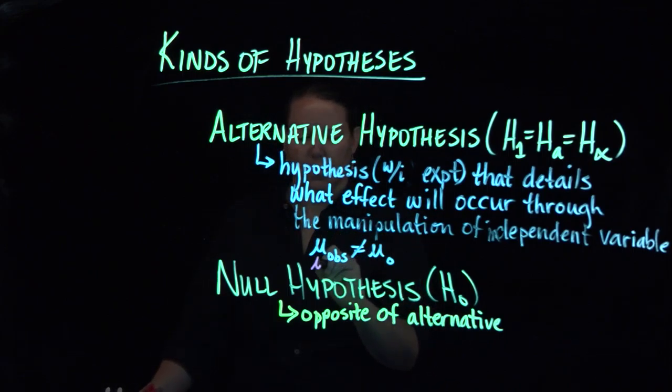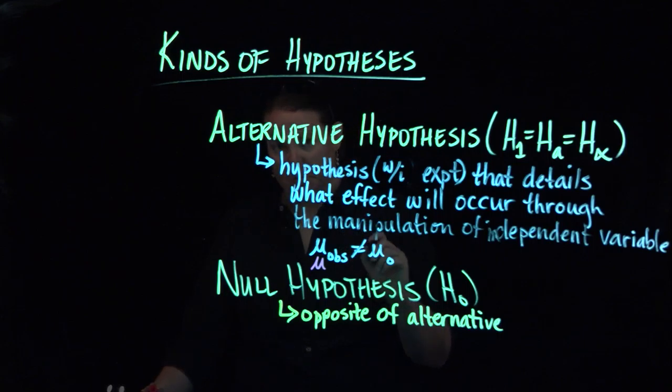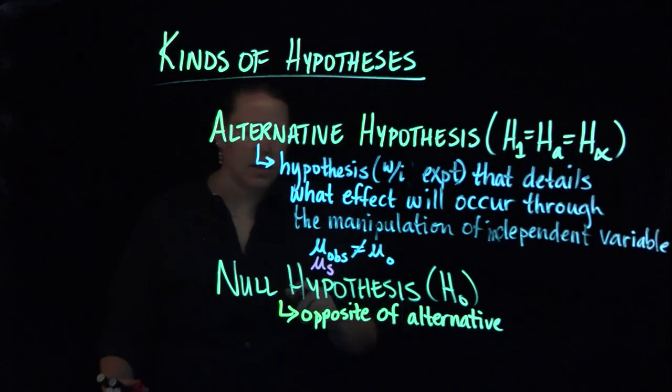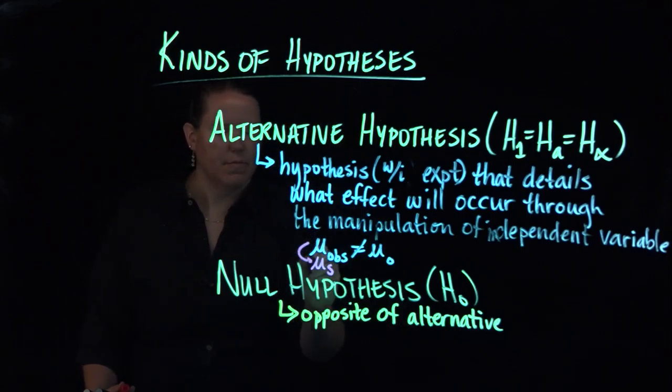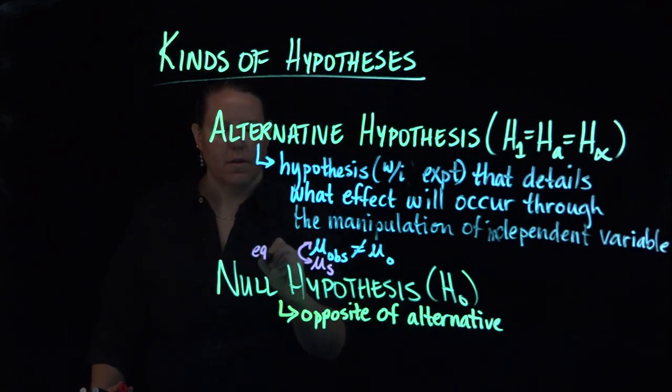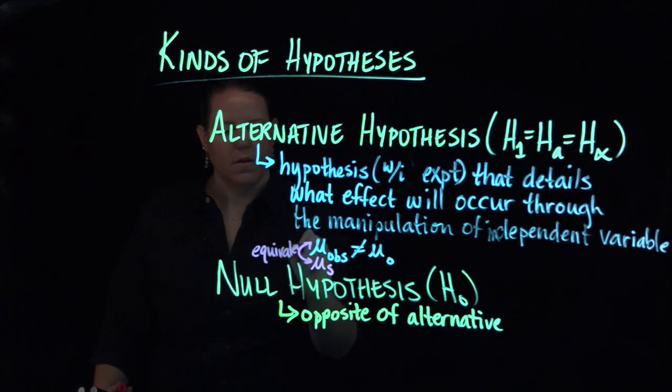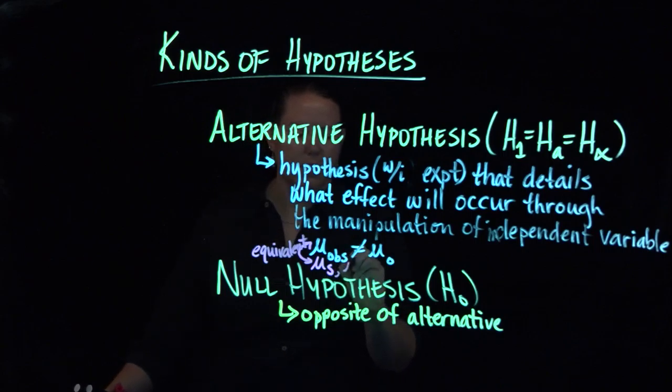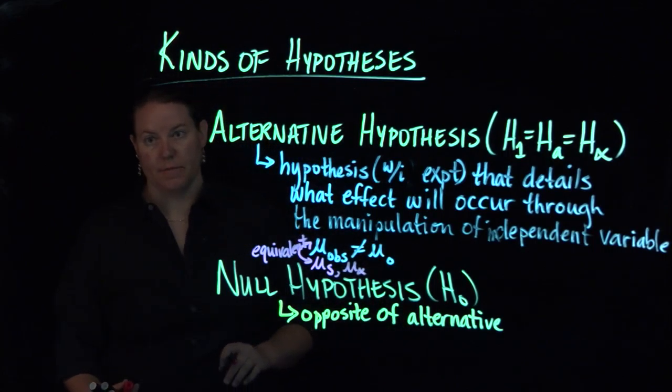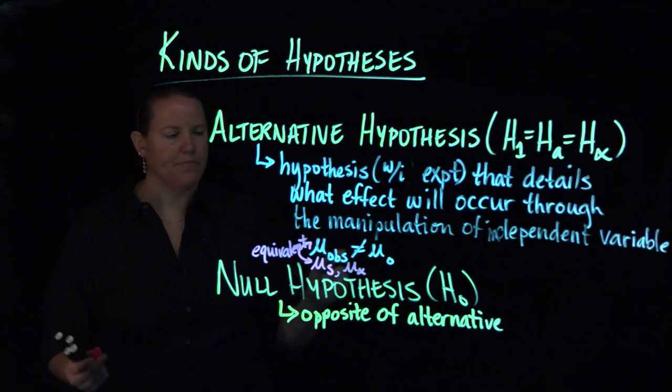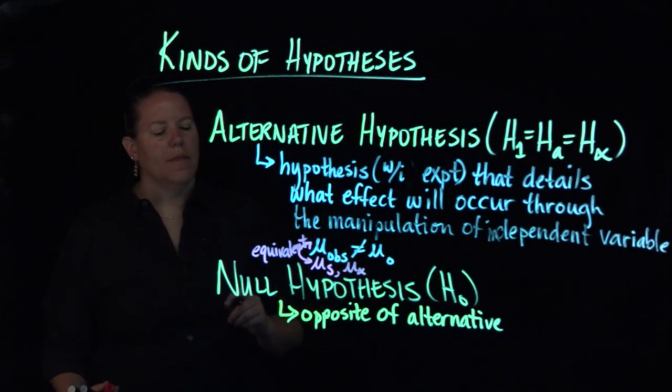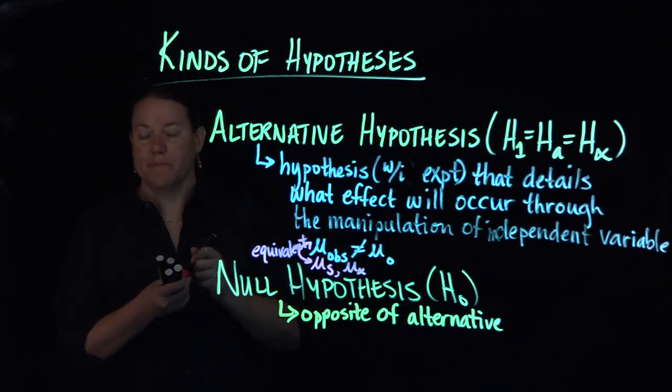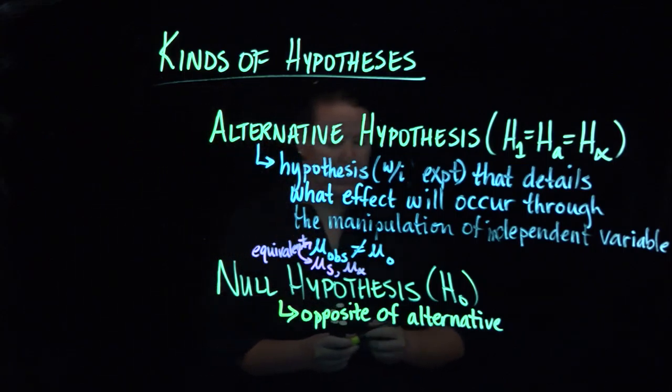So if this is my, and we could say mu observed or mu, it's not u, sorry, that's mu, the Greek letter mu. You get mu statistics, whatever. These are equivalent. You could also say mu s, you could say mu alpha, any number of things, right? Whatever is being tested. The null hypothesis is the direct opposite, direct opposite of the alternative hypothesis.